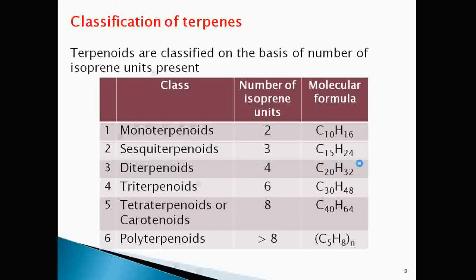Terpenoids are classified on the basis of number of isoprene units present. Two isoprene units are called monoterpenoids, three isoprene units sesquiterpenoids, four isoprene units diterpenoids, six isoprene units triterpenoids, eight isoprene units are called tetraterpenoids or carotenoids and more than eight isoprene units are polyterpenoids.